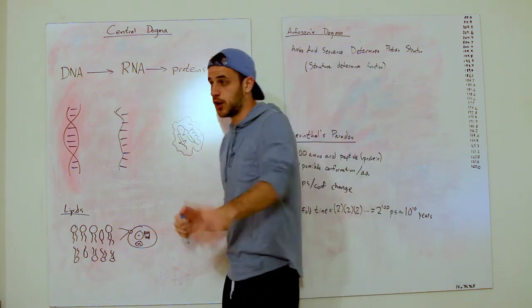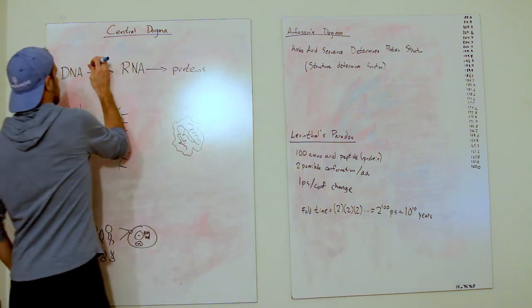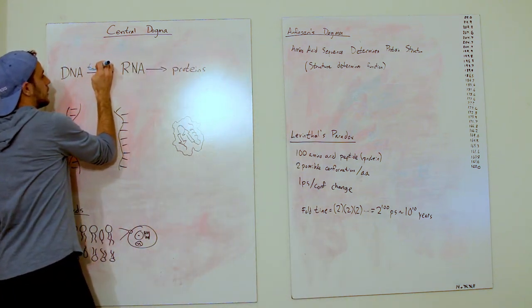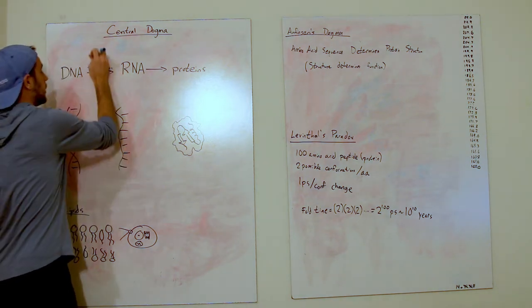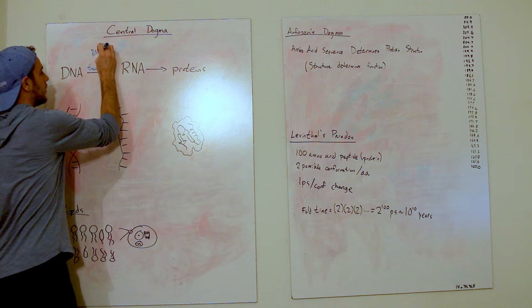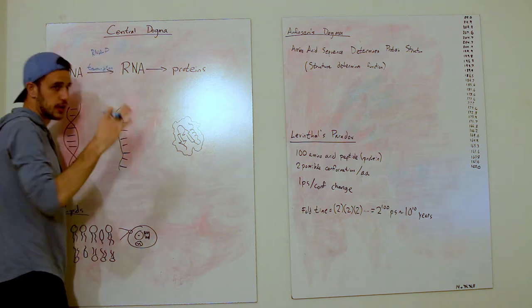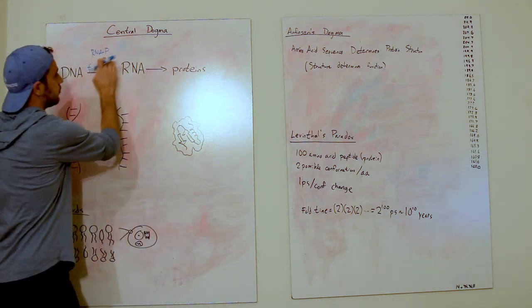So the process of DNA into RNA is called transcription, and that's performed by something called an RNA polymerase. There are many different types of DNA, and those guys are actually proteins.